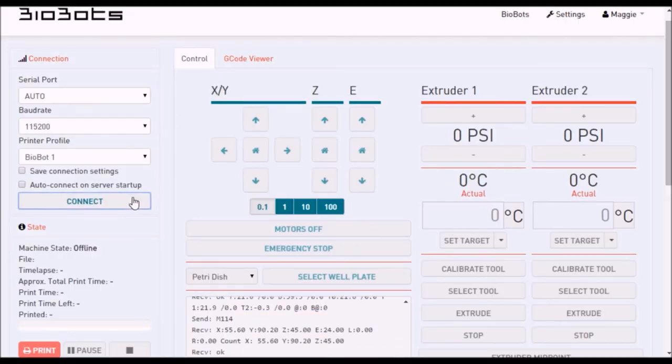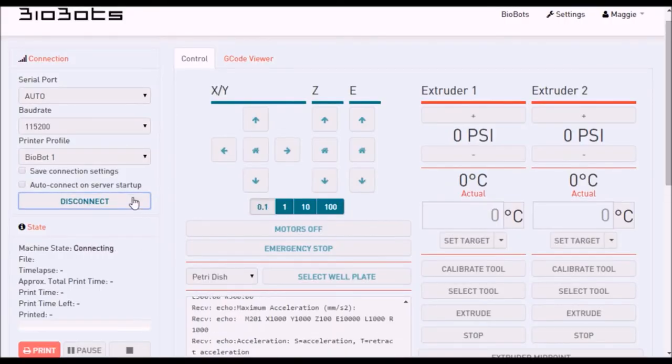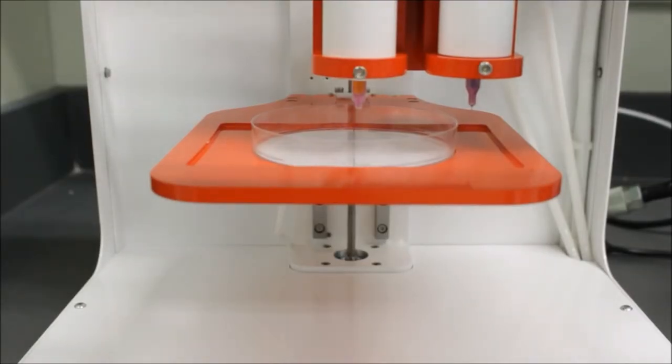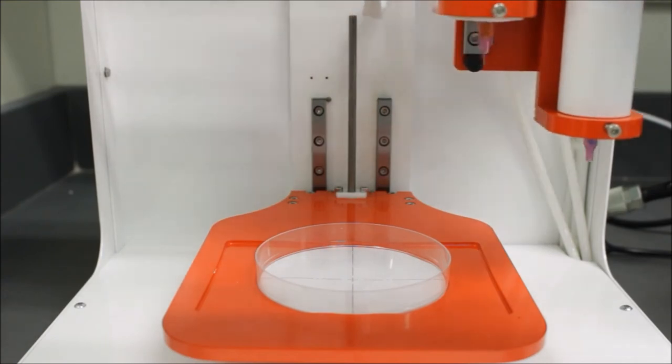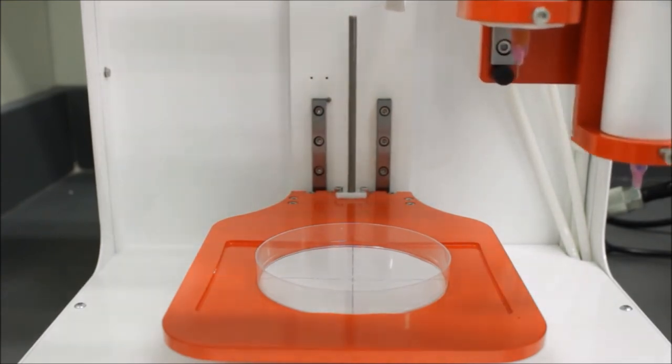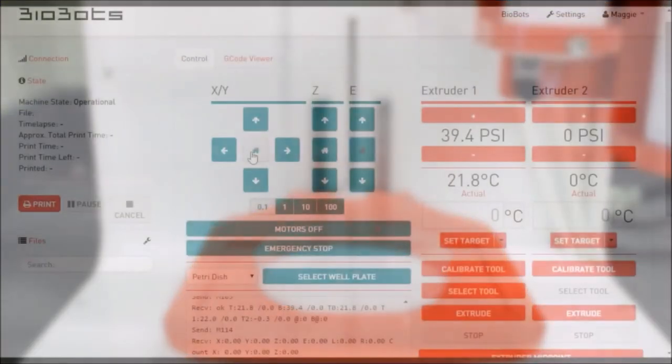Next, open up Biobot software and connect to your Biobot. Home the Z, then the extruders, and finally, the X and Y axes.